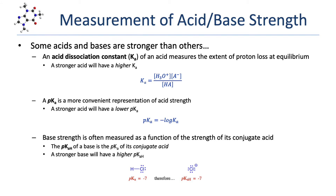Base strength is usually measured as a function of the strength of its conjugate acid. There's a value for this called the pKaH, which is simply the pKa of the conjugate acid of the base. For example, HCl is a strong acid with a pKa of negative 7. The conjugate base of HCl is chloride (Cl-), so we can measure how basic chloride is by looking at the pKa of its conjugate acid HCl. That means the pKaH value for chloride is negative 7.